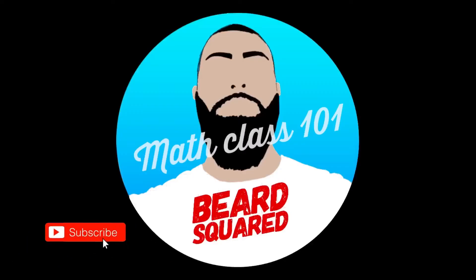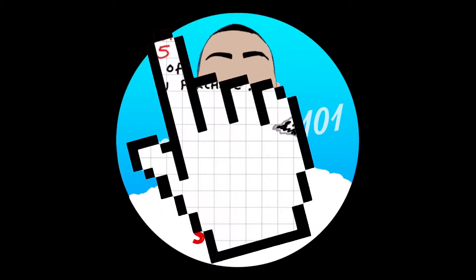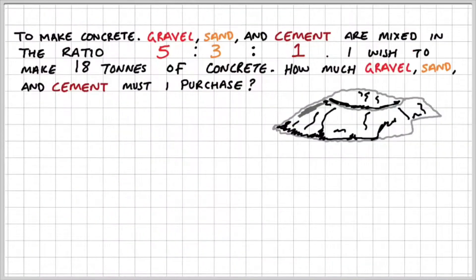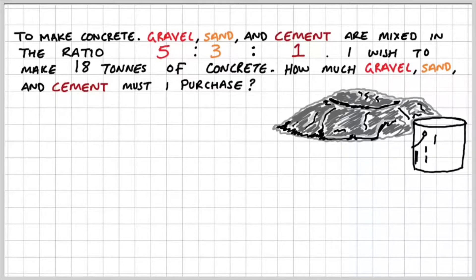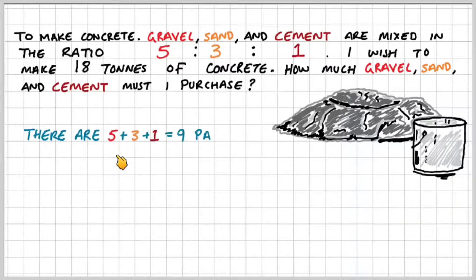Let's move on to our last example. To make concrete, gravel, sand and cement are mixed in the ratio of five to three to one. I wish to make 18 tons of concrete — how much gravel, sand and cement must I purchase? Pause the video here and try to solve it for yourself. So I know that there are five plus three plus one — nine total parts.